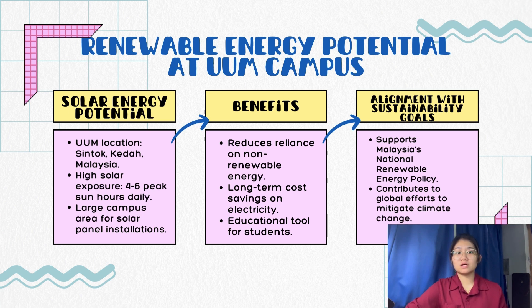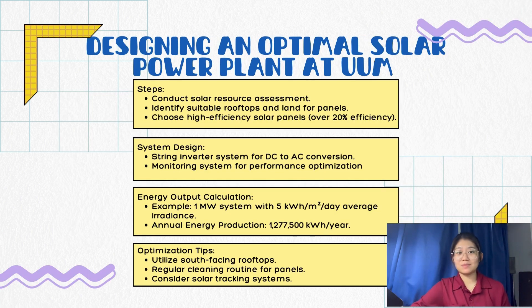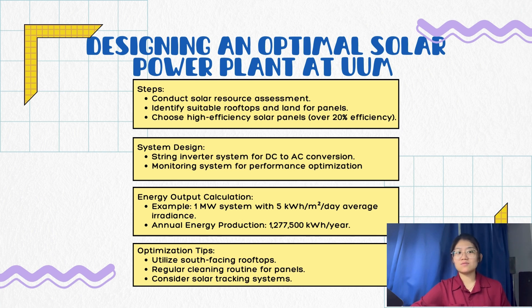Additionally, incorporating solar energy into the curriculum can provide students with practical exposure to renewable energy technologies, promoting sustainability and environmental conservation. To design an optimal solar power plant for UAM campus, start with a solar resource assessment to determine sun exposure, choose high-efficiency panels and identify suitable installation sites, implement a system to convert DC to AC power, and use a monitoring system for performance. For instance, a 1 MW system with 5 kWh per m² per day average irradiance can produce around 1,277,500 kWh annually. Optimize the system with south-facing rooftops, regular cleaning, and solar tracking.